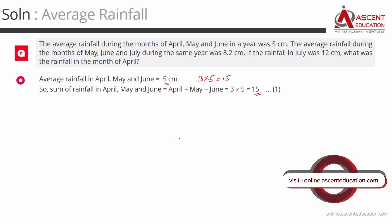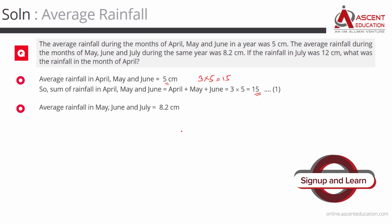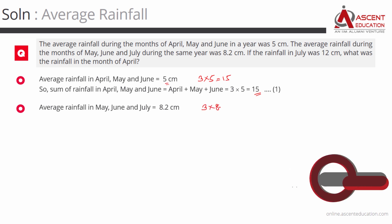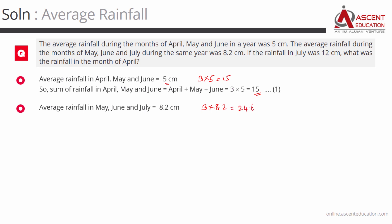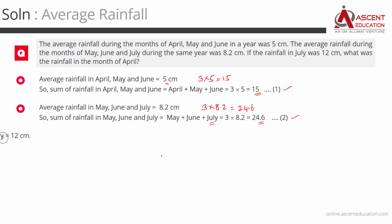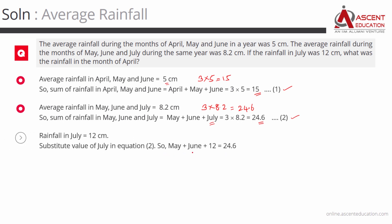Next, May, June, July average is 8.2 centimeters. The number of months times the average gives us the sum of rainfall: 3 times 8.2, which is equal to 24.6. So the sum of the rainfall for May plus June plus July is equal to 24.6 centimeters.